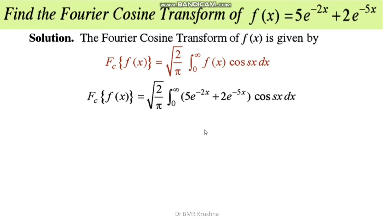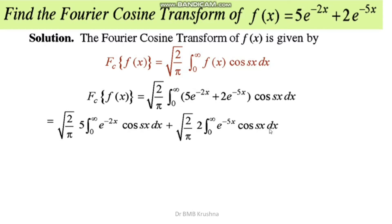This integral can be written as the sum of two particular integrals: the first one involving 5e^(-2x) and the second one involving 2e^(-5x). These two integrals can be evaluated by using the standard reduction formula.